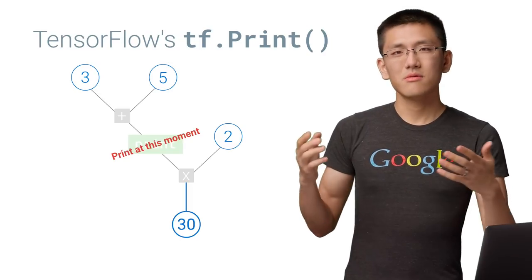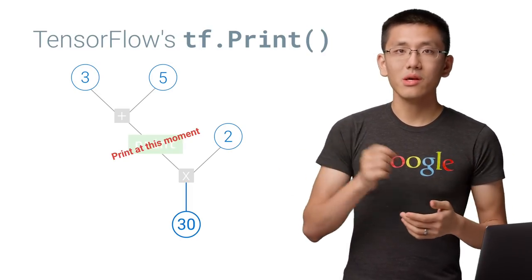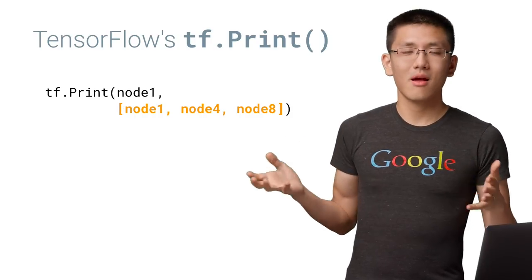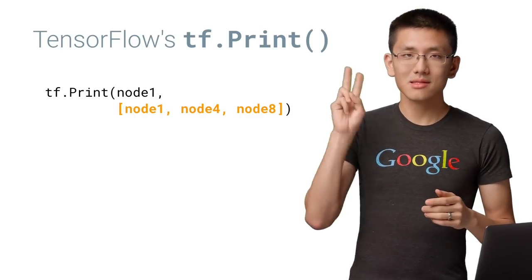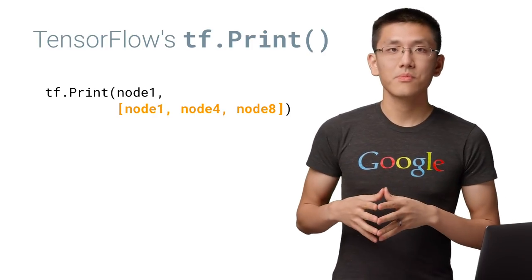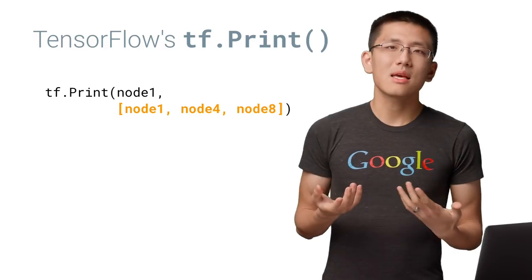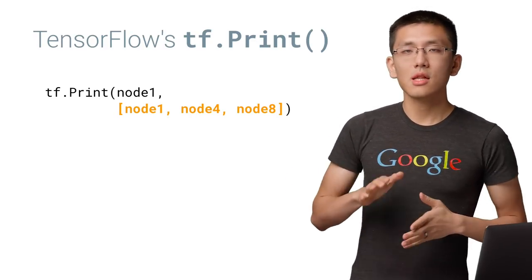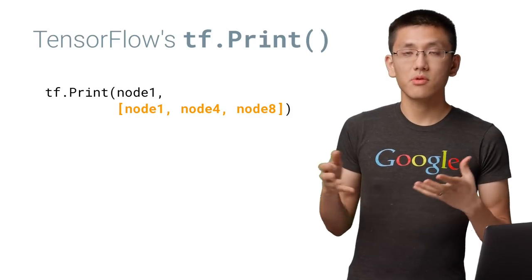However, there aren't really many restrictions on what you print. That is, you can print just about any node in the graph that you can access. This is the second argument to the tf.print call, an array of nodes to print. Often we'll just use the same node as the first argument, which was that input. But we could include a lot more nodes in the print statement if we'd like.